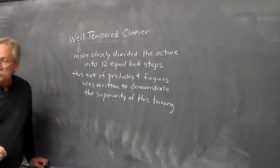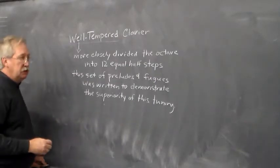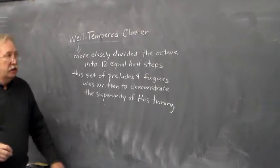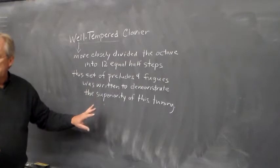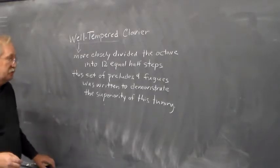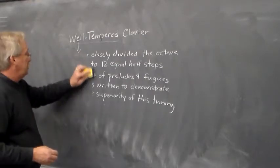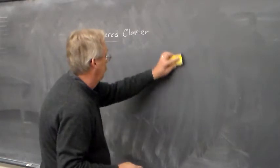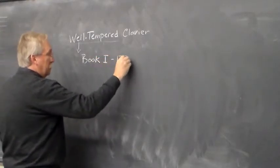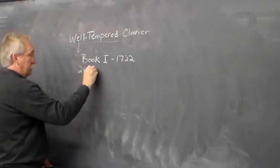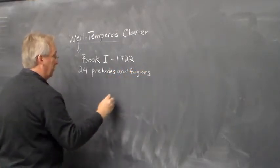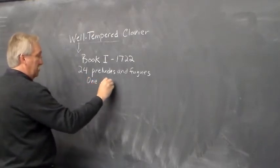And so what Bach did was to write a prelude and fugue in every major and every minor key. So there were twelve major preludes and fugues and twelve minor preludes and fugues. So there's twenty-four in the first book of the Well-Tempered Clavier. And he wrote two books. So in total, there are forty-eight. So twenty-four in book one, which was composed and finished in 1722, and then book two.